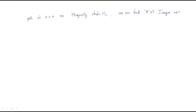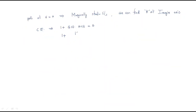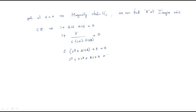We use the characteristic equation: 1 + G(s)H(s) = 0. Substituting G(s)H(s) = K / [s(s+1)(s+2)] gives: s(s+1)(s+2) + K = 0. Expanding: s³ + 3s² + 2s + K = 0.